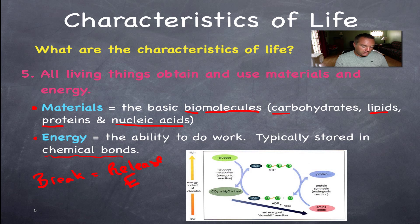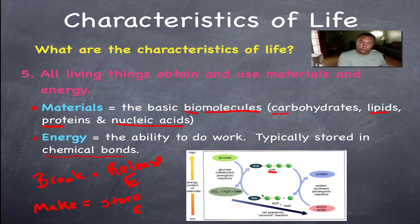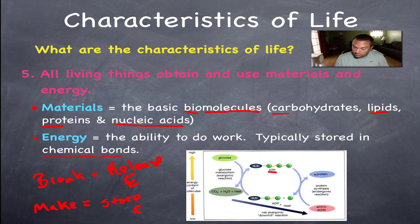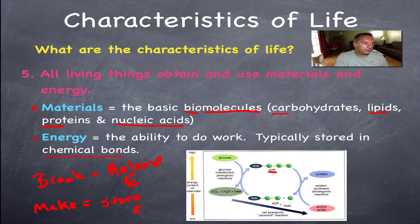When you break a bond, you release energy; when you make a bond, you're storing energy. ATP is how we transfer energy from one set of chemicals to another. For example, you take in glucose (sugar) and transfer that energy into an ATP molecule, which can then be used to build proteins from amino acids. We'll talk about how ATP cycles back and forth from ADP in much more detail in upcoming chapters.